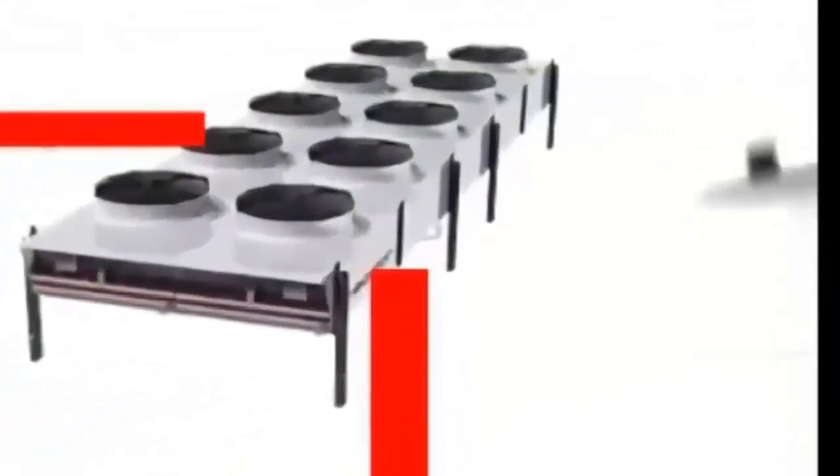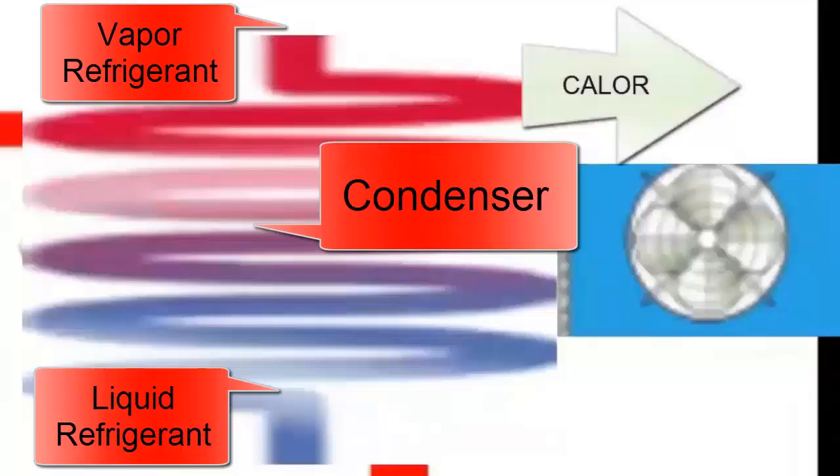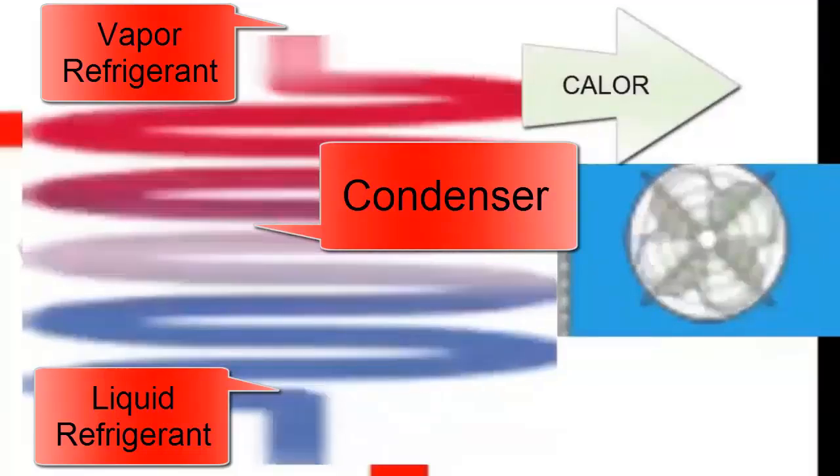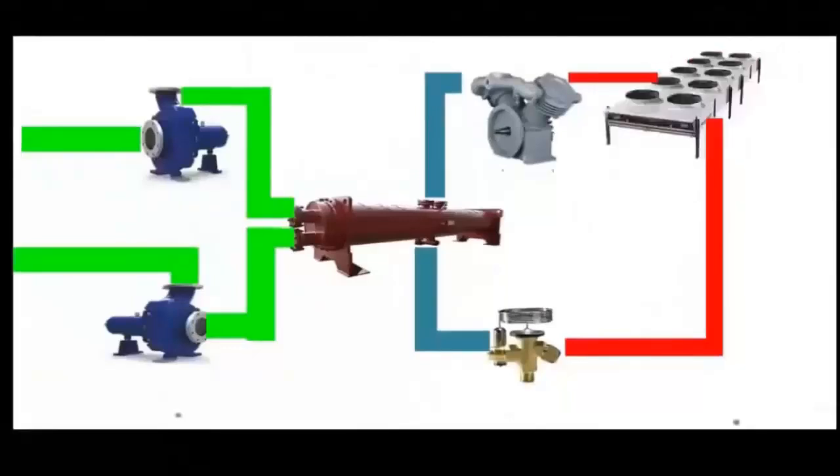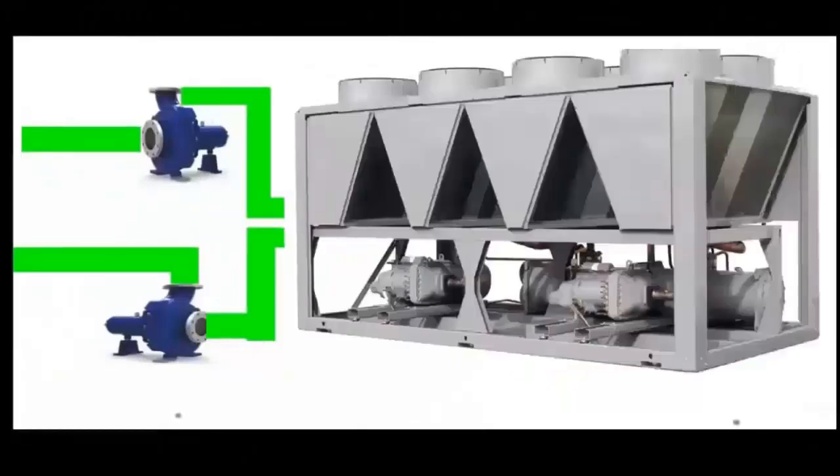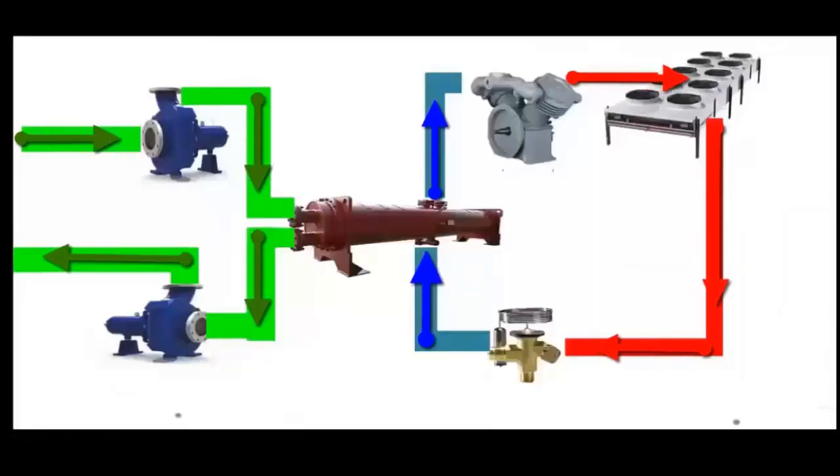In the condenser, the refrigerant releases the absorbed heat to the outside environment and condenses, returning to its liquid state. This process is essential for the system's heat dissipation, allowing the refrigeration cycle to continue operating without interruptions. Without this continuous cycle, the system could not maintain the efficiency and effectiveness necessary to meet cooling demands.